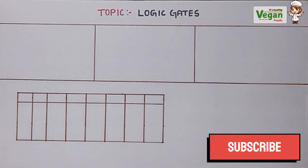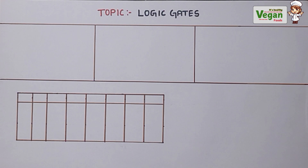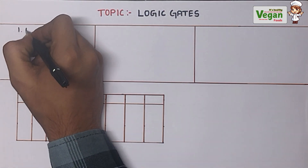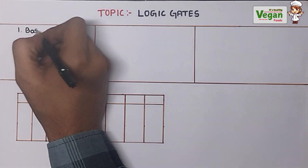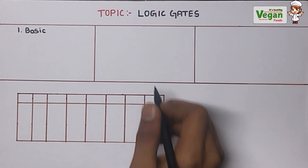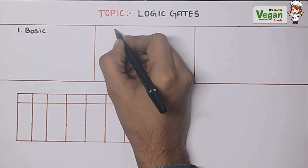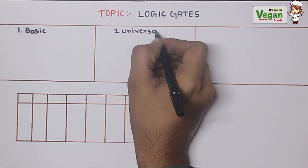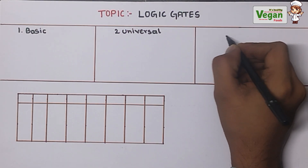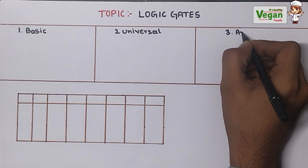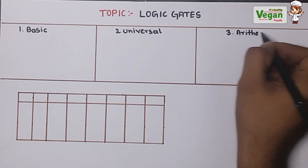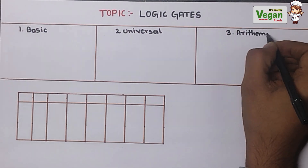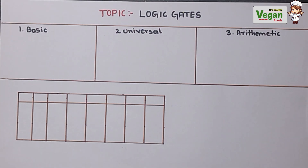In logic gates, we mainly have three types. First one is basic logic gates. Second one is universal logic gates. Third one is arithmetic logic gates. In each of the logic gate types, we have subclassifications.